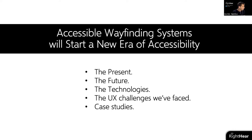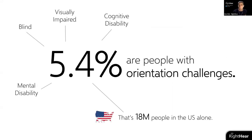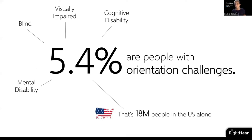First, a little about numbers. When talking about people with orientation challenges, according to our research this is 5.4% of the population. Under this umbrella we include people with some cognitive disability causing orientation challenges, people who are blind or visually impaired, and people with different mental disabilities. That 5.4% in the US alone is around 18 million people — a lot of people getting lost in a more significant way than I do.